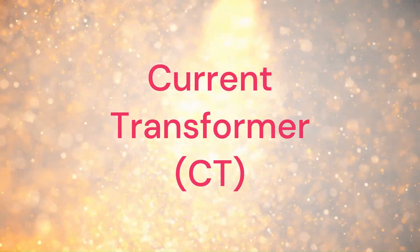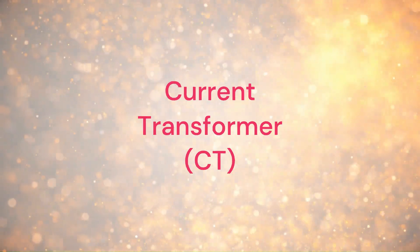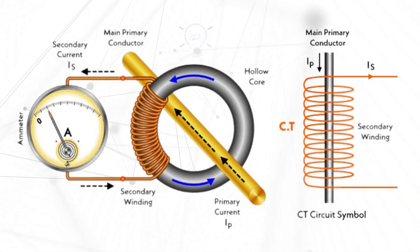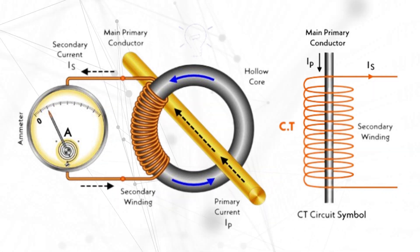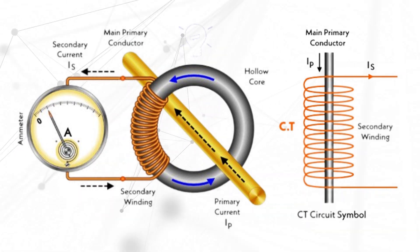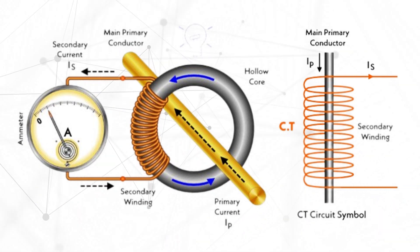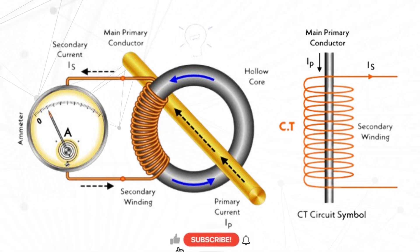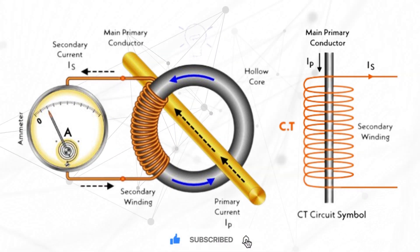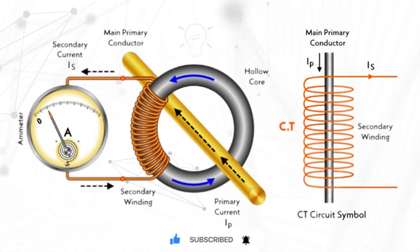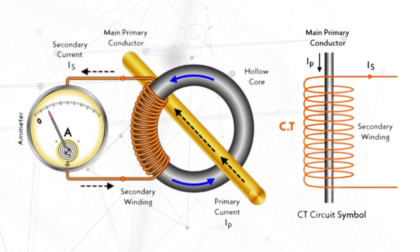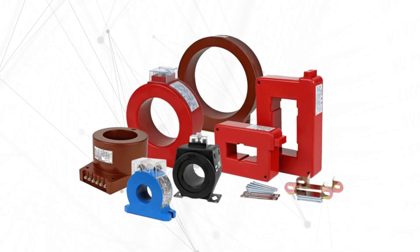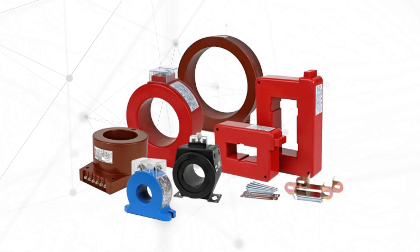First up, let's talk about current transformers, or CTs. A CT is a vital part of electrical systems. Basically, it is a step-up transformer with a single-turn primary coil. Its primary role is to step down high currents to safer and measurable levels by increasing the secondary voltage. As the current flows through the primary winding, it induces a proportional current in the secondary winding. This secondary current can then be easily measured or used for protective purposes. Based on the secondary current, two types of CTs are available: 1A and 5A.